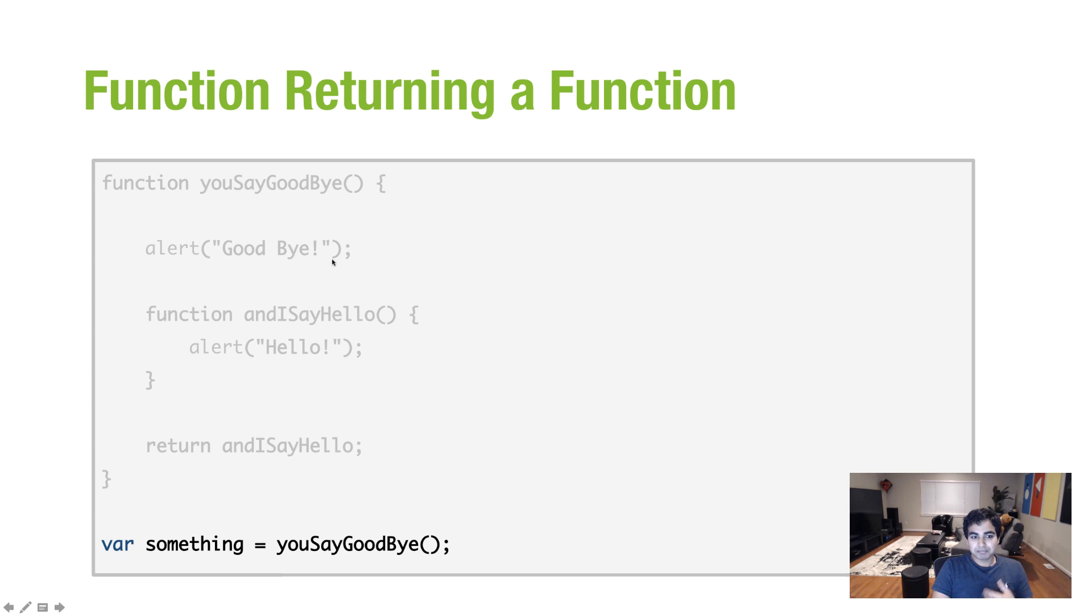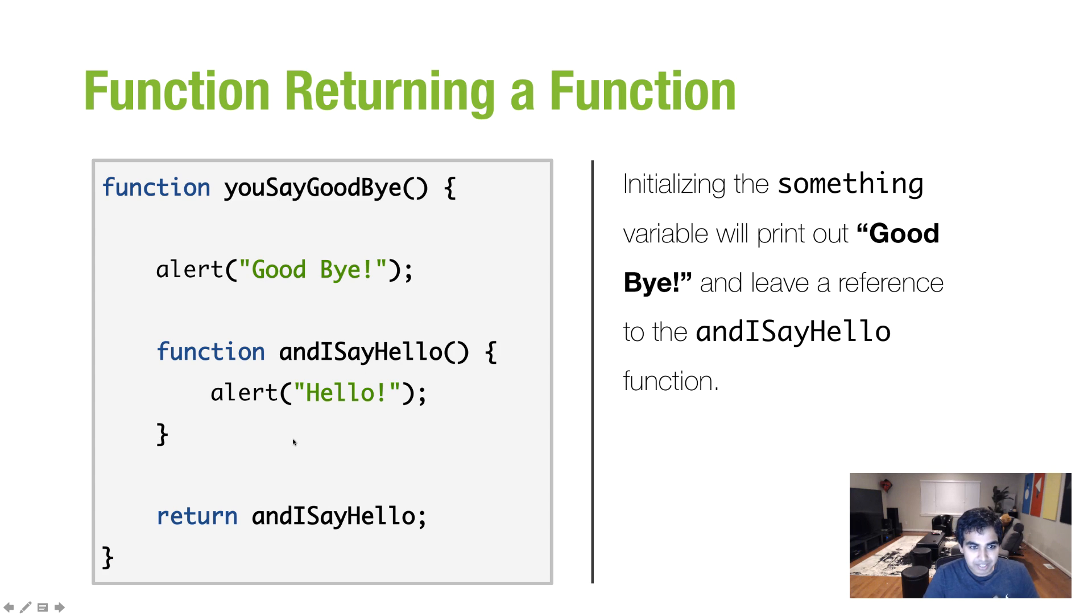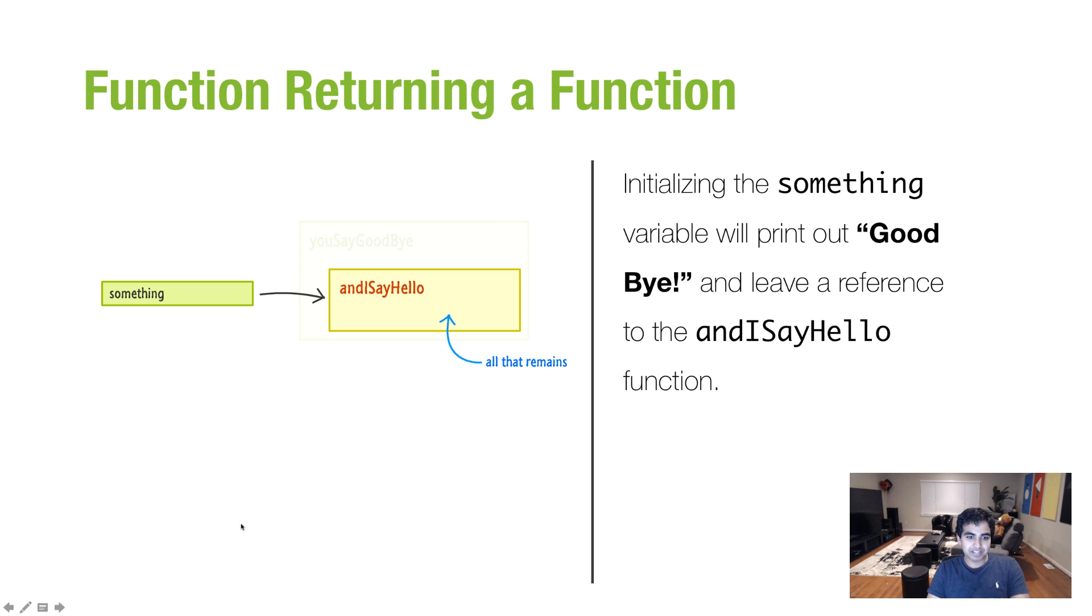I'm going to set it to the value of the youSayGoodbye function, the outer function that is out there. Now, once I do that, look at what happens. Function youSayGoodbye gets called. The alert statement, goodbye, prints. And then the function andISayHello is what gets returned. So here's what it actually looks like. So initiating the something variable would print out goodbye because that's part of the youSayGoodbye function itself. And then the reference to andISayHello is what basically gets returned.